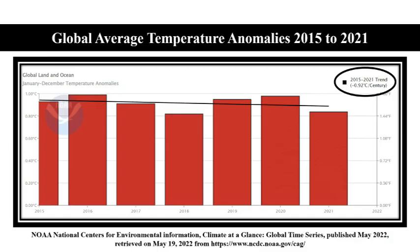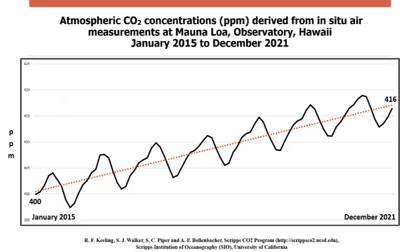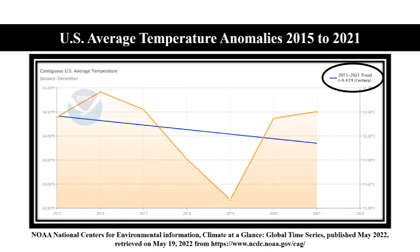In previous videos, this channel has revealed that NOAA data shows that the global average temperature has been falling since January 2015 at a rate of minus 0.92 degrees Celsius per century. We did not know how to explain this, as the atmospheric concentration of carbon dioxide had been increasing throughout the same period. We also noted that the United States average temperature was decreasing at a faster rate than the global rate, the US rate being minus 9.43 degrees Fahrenheit per century.